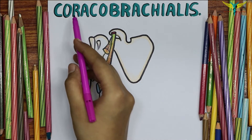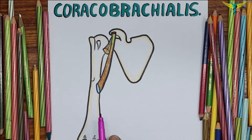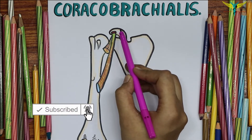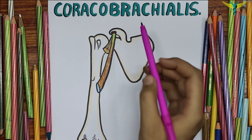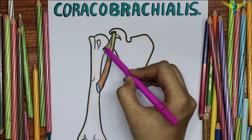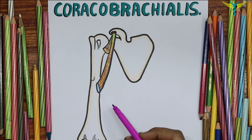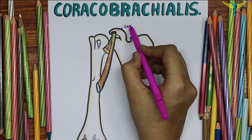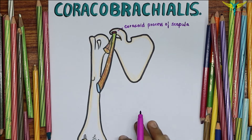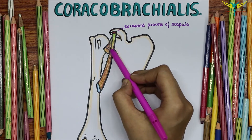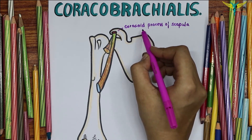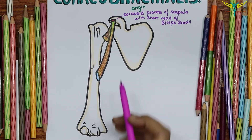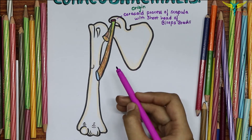In this video let's learn about the coracobrachialis. The coracobrachialis originates from the tip of the coracoid process of the scapula, along with the short head of the biceps brachii. This is the coracoid process of the scapula, and it originates with the short head of the biceps brachii.